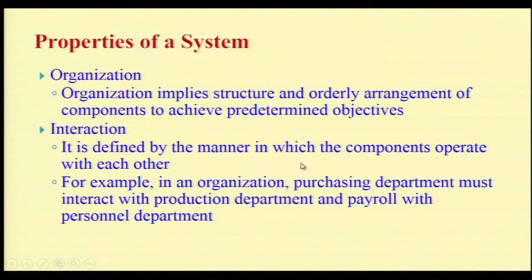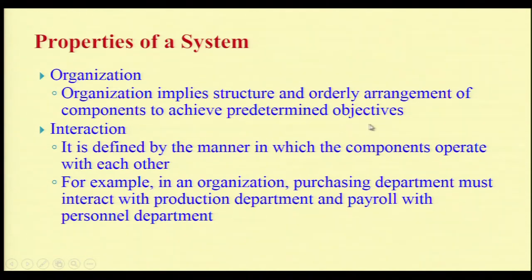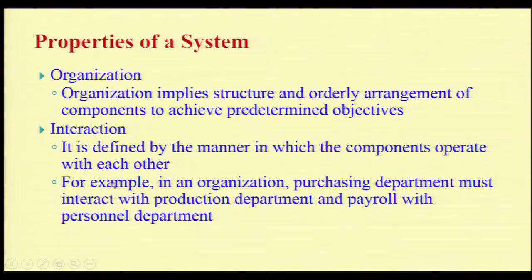Next are the properties of a system. The first property is about organization. Organization implies the structure and orderly arrangement of components to achieve predetermined objectives. The second property is interaction, defined by the manner in which the components operate with each other. For example, in an organization, the purchase department should interact with the production department, and the payroll department should interact with the HR or personnel department.